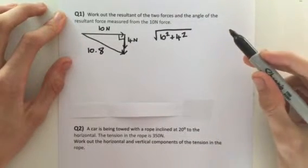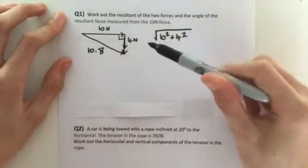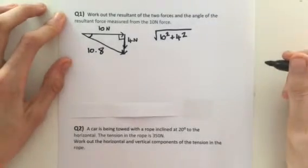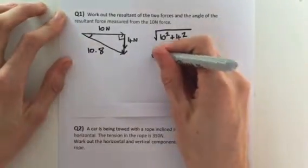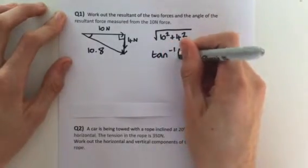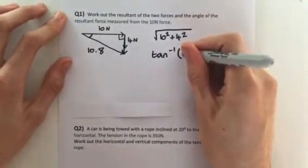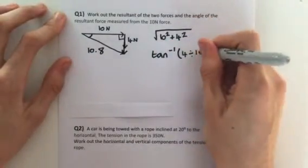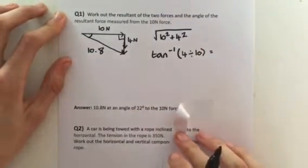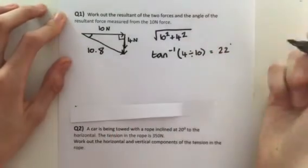Then it says work out the angle of the resultant force measured from the 10 newton force. So it's this angle here. So if you remember what we did last time, we take the inverse tangent of 4, your vertical, divided by 10. And that should give us 22 degrees. So if you've got that, well done.